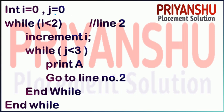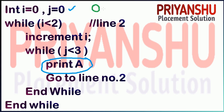Today's first question: I is initialized to 0 and j is initialized to 0. While I is less than 2 — you need to tell how many times 'a' will be printed. Please pause the video and try it yourself. The value of I is 0, and 0 is less than 2, so the condition is true.